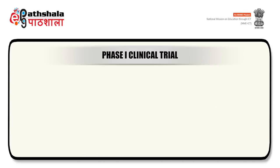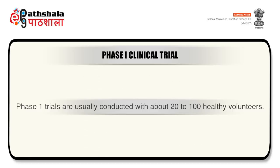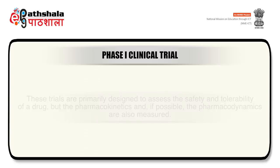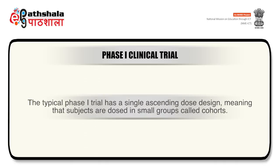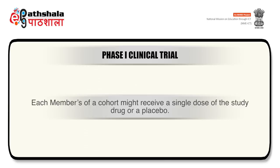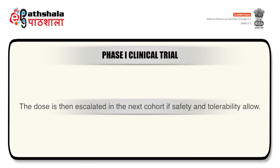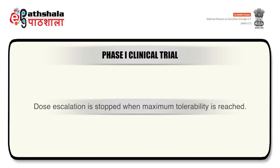After successful Phase 0 clinical trials, Phase 1 clinical trials are performed. Phase 1 trials are usually conducted with about 20 to 100 healthy volunteers and are primarily designed to assess the safety and tolerability of a drug, though pharmacokinetics and pharmacodynamics are also measured. The typical Phase 1 trial has a single ascending dose design, meaning subjects are dosed in small groups called cohorts. Each cohort member receives a single dose of the study drug or placebo, starting with a very low dose, and the dose is escalated in the next cohort if safety allows. Dose escalation is stopped when maximum tolerability is reached.